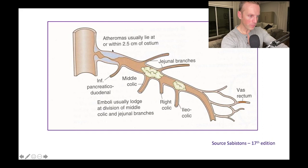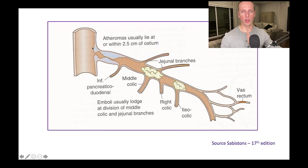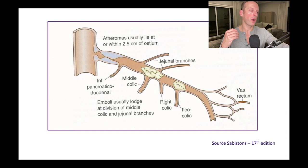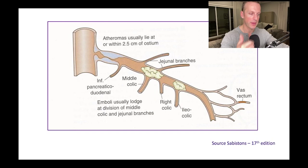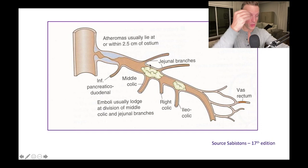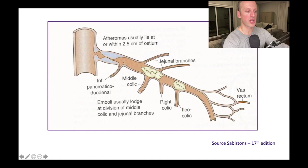This anatomy is important: thrombotic events typically occur at the SMA ostium or origin — areas of turbulent flow at bifurcations and vessel takeoffs promote atherosclerotic disease, just like in the iliac or carotid arteries. That atheroma is where the acute thrombotic event occurs, proximally. By contrast, an embolic event involves a clot thrown from the heart into the SMA, pushed distally until it causes dense ischemia. So there's a difference between thrombotic location (proximal) and embolic location (distal) — useful for making the diagnosis.